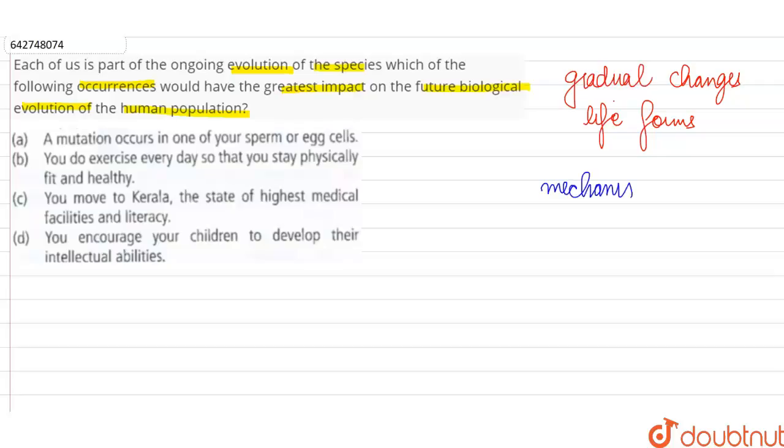So if we talk about the mechanism for this evolution, we study mainly two theories. On one hand we have the theory given by Jean Baptiste Lamarck, and on the other hand we have the Darwinian theory of natural selection that was given to us by Charles Darwin.